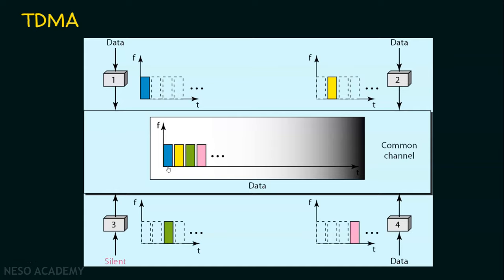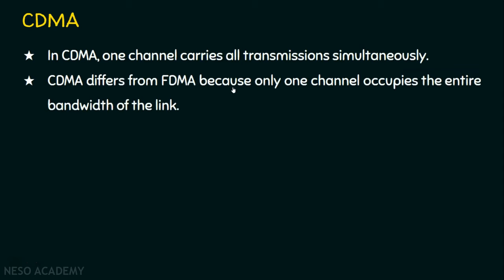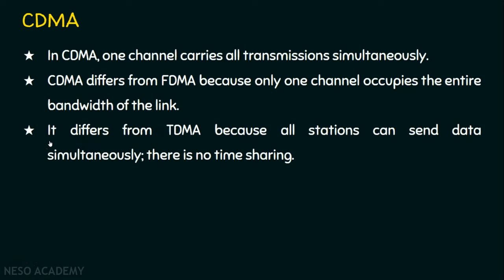Now let's see the last technique — CDMA. In CDMA, one channel carries all transmissions simultaneously. In FDMA, we saw the channel carries all transmissions simultaneously by dividing frequency bands. In TDMA, it used a time-sharing approach. How does CDMA differ from FDMA and TDMA? CDMA differs from FDMA because one channel occupies the entire bandwidth of the link at one point in time. It differs from TDMA because all stations can send data simultaneously and there is no time sharing — at any particular point in time, everyone's data is present in the channel. When we see an example, it will be more clear.